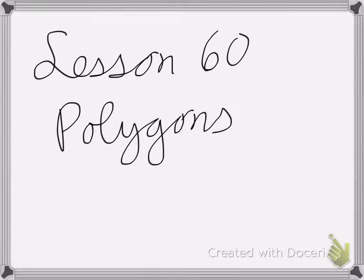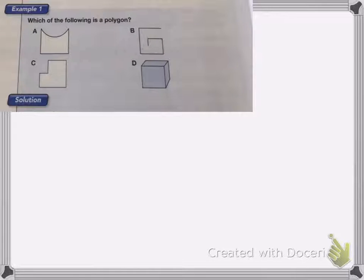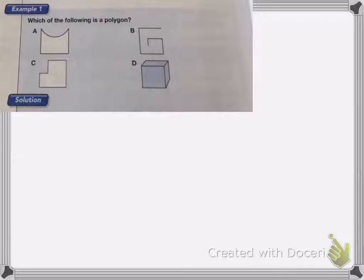Lesson 60 is on polygons. Here we have four different lines and shapes and I want to know which one is a polygon. A polygon is an enclosed shape that has straight lines.